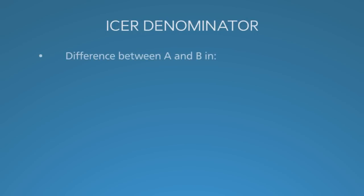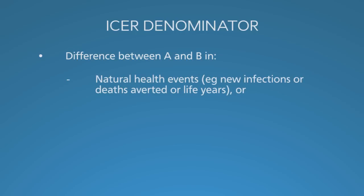The denominator is the difference between options A and B in terms of one of several possible measures of health. In one cost-effectiveness report, you can examine multiple outcomes. Let's start with natural health events. Examples are new infections, deaths averted, life years, or disease episodes. It's important to present the effectiveness of the program in terms of outcomes that people can understand, particularly when presenting to clinicians and other non-economists. Everyone can understand if you say it costs $1,000 to avert a new infection, or $500 to prevent a death, or $50 per added life year. This is the kind of statement that makes sense to all of our health colleagues.